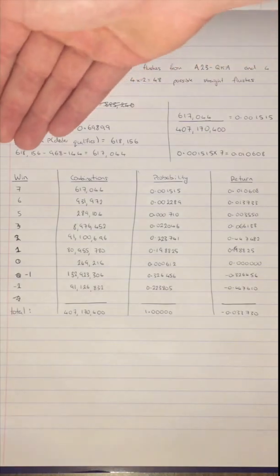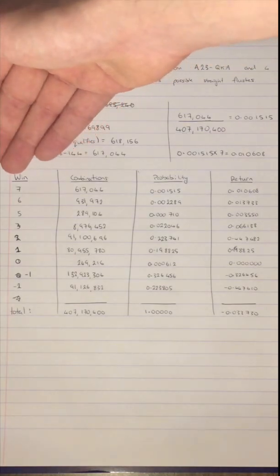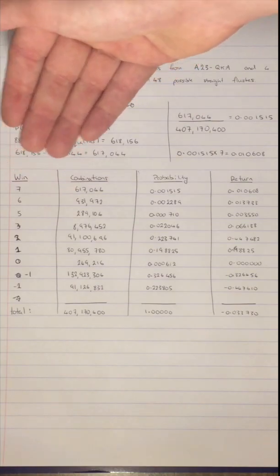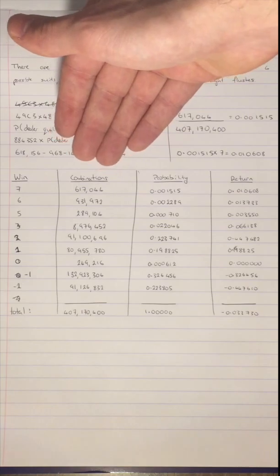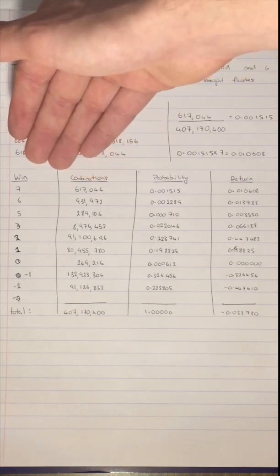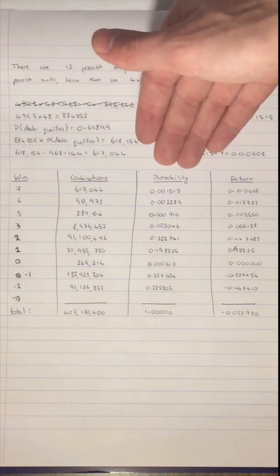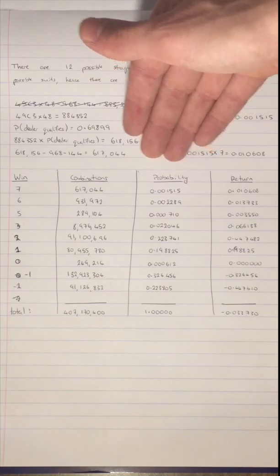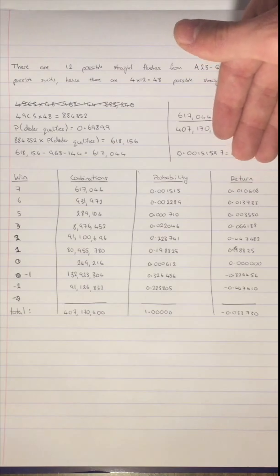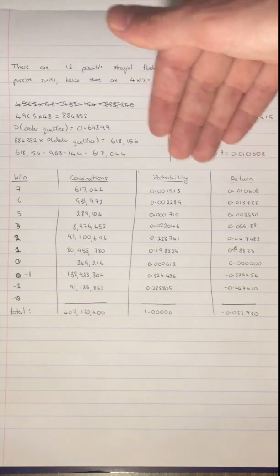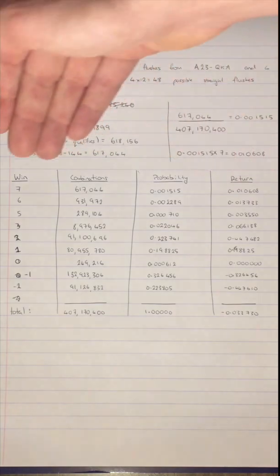Over here in the top column is how much a player expects to win. Over here is the total number of combinations that there are for a particular win amount and next to here is the probability of that combination and then in the last column is the return which is the amount a player expects to have returned for this particular win.